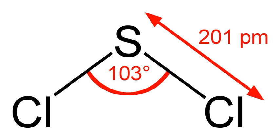Disulfur dichloride, S2Cl2, is the most common impurity in sulfur dichloride.